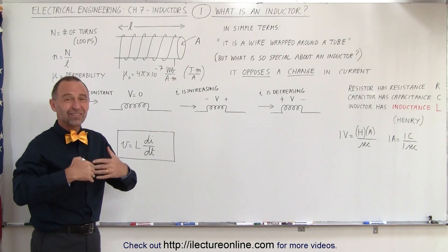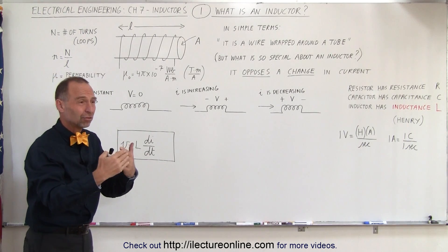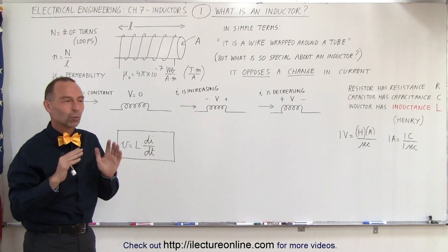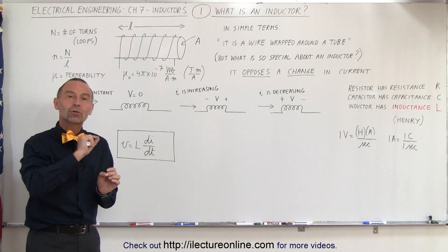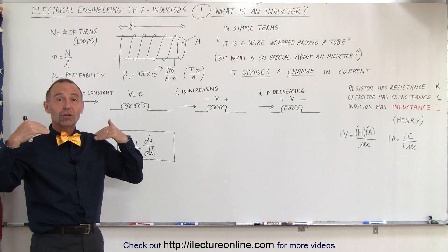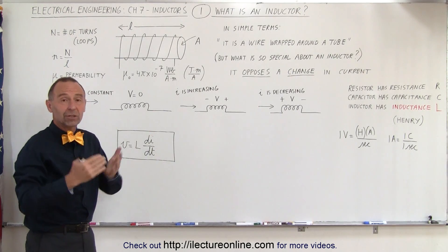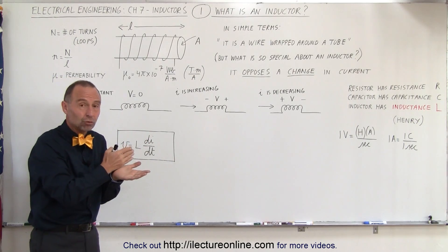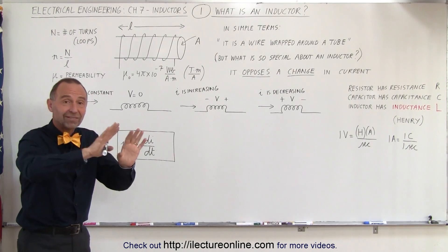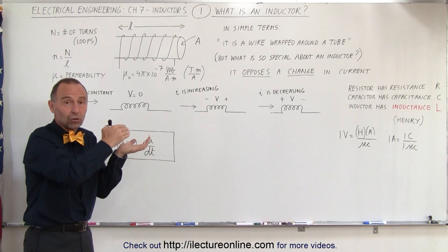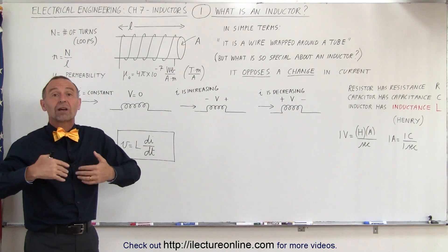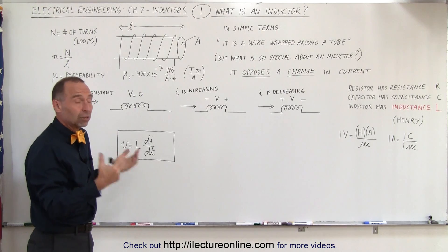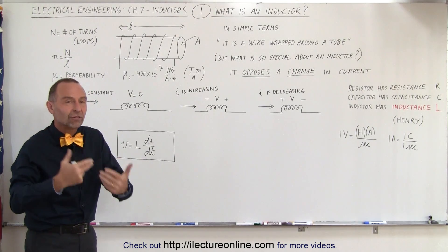In other words, if there's DC current — steady state current — the inductor does absolutely nothing. It just sits there and there's no effect on the circuit whatsoever. The moment the current tries to change, that's when an inductor basically jumps into action and tries to oppose that change. If the current tries to increase, the inductor tries to keep it from increasing. If the current tries to decrease, the inductor tries to keep it from decreasing. And that's why inductors are so useful in electrical circuits.